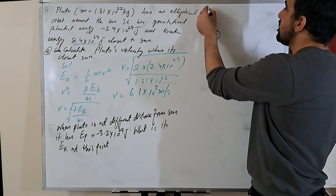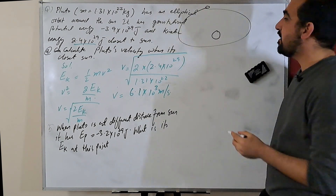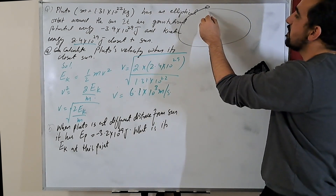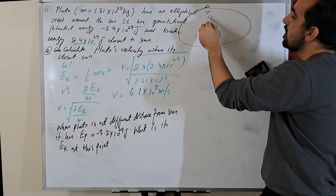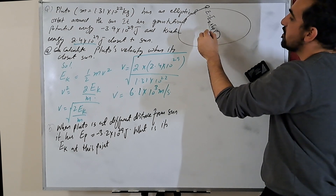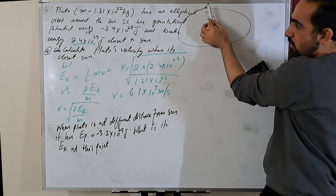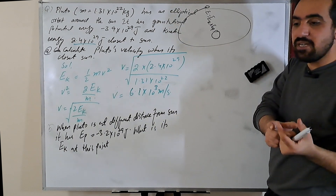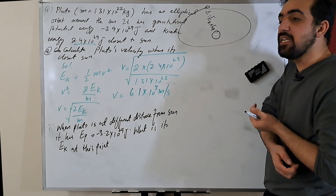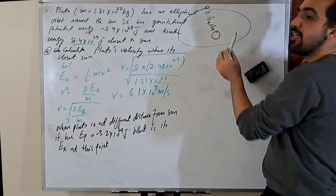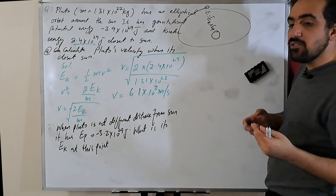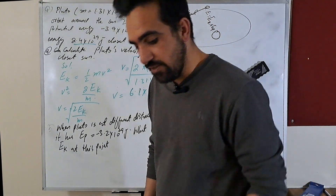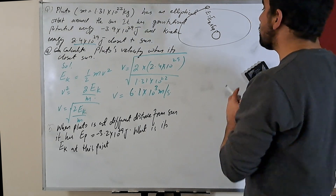Pluto moves in an elliptical orbit around the Sun. When it was closest to the Sun, its total energy E equals kinetic energy plus potential energy. As it moves to any other point, the total energy remains the same. At the closest point, kinetic energy is maximum and potential energy is minimum. As it moves, kinetic energy decreases because speed decreases, and potential energy increases because the distance from the Sun increases.